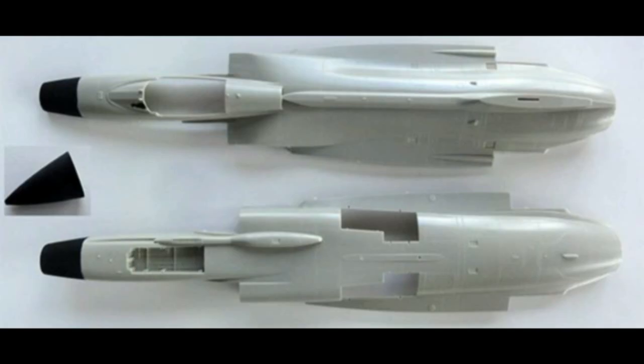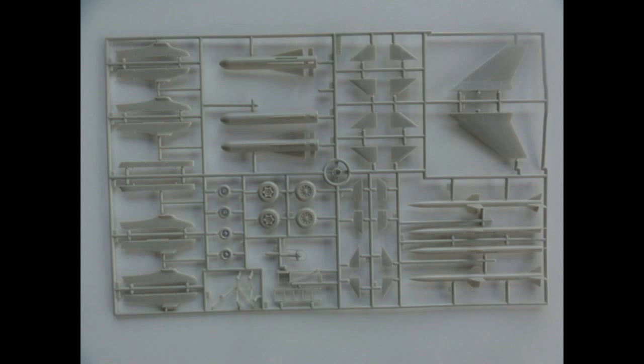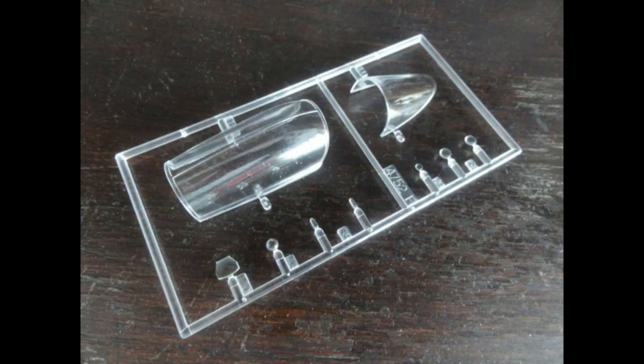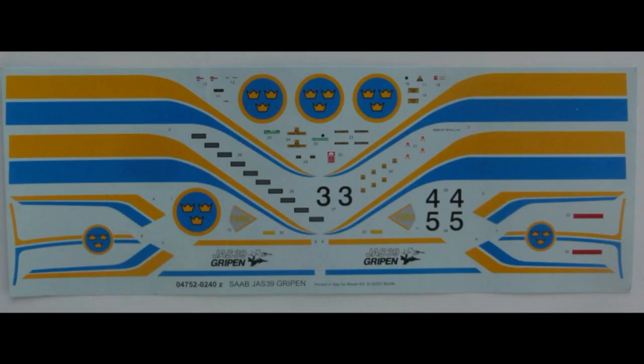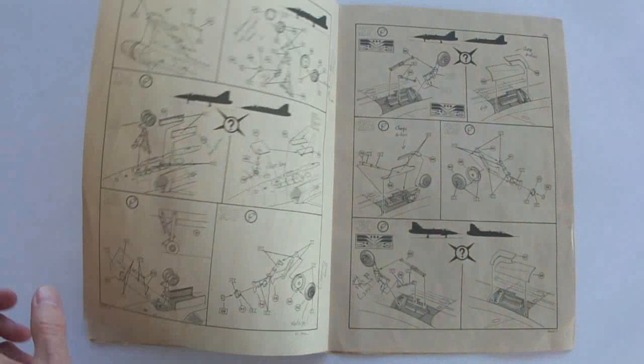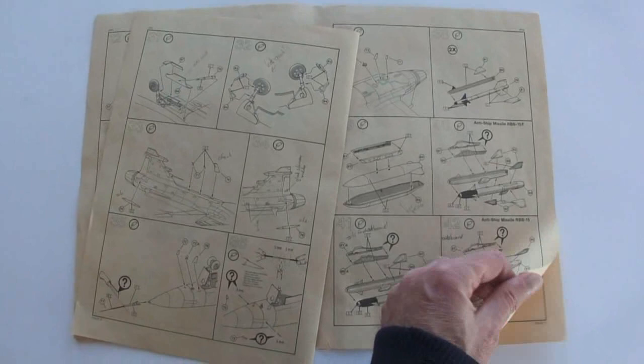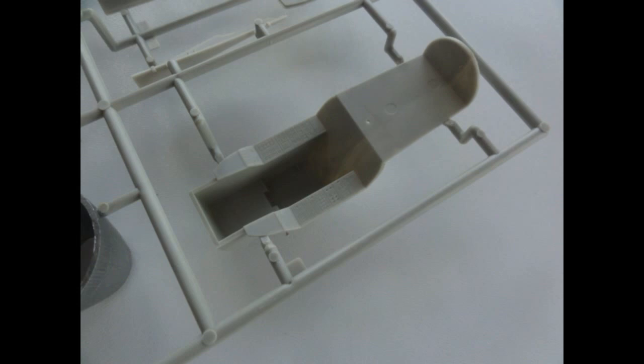The Revell Germany 32 scale kit of the Saab JAS 39 Gripen was released way back in 1991. The kit numbered 4752 has about 125 parts and contained also a sort of engine, an entry ladder and stores like missiles and fuel tanks. The kit instructions are simple but clear. I had seen some models built over the years and the kit shapes simply did not look right as the models seemed to be too compact. A few decades later, I examined a bit further if the model could be improved.